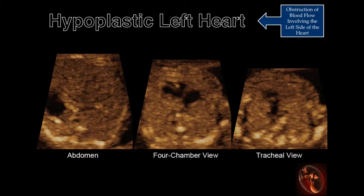These three images are obtained from a transverse sweep from the abdomen to the upper chest. What is abnormal?